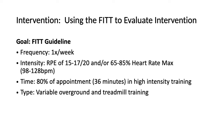My targeted frequency for this patient was once a week. I was targeting an intensity of 15 to 17 out of 20 on his rating of perceived exertion and/or 65 to 85% of his heart rate max, which for this patient was calculated to be 98 to 128 beats per minute. I was aiming for 80% of the appointment time — 36 minutes of a 45-minute appointment — to be spent on high-intensity gait training, with planned use of overground and treadmill training.